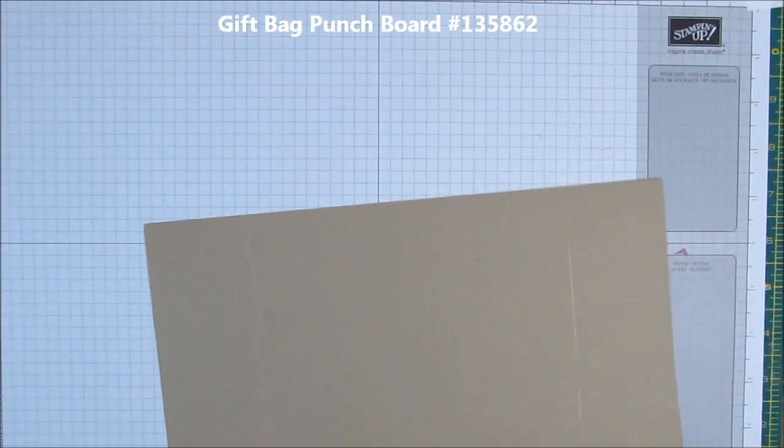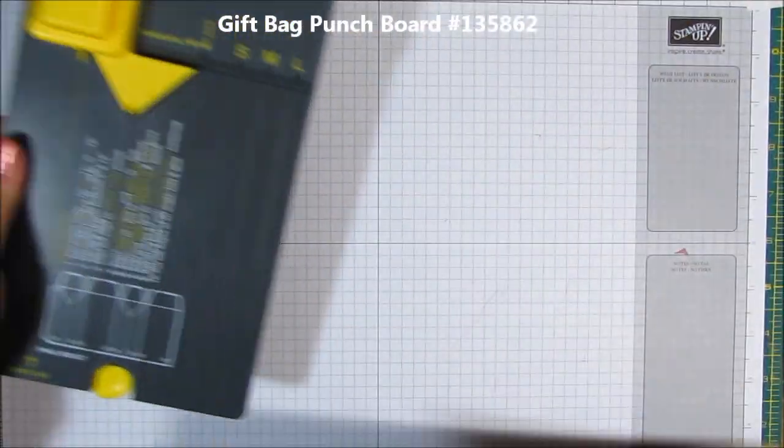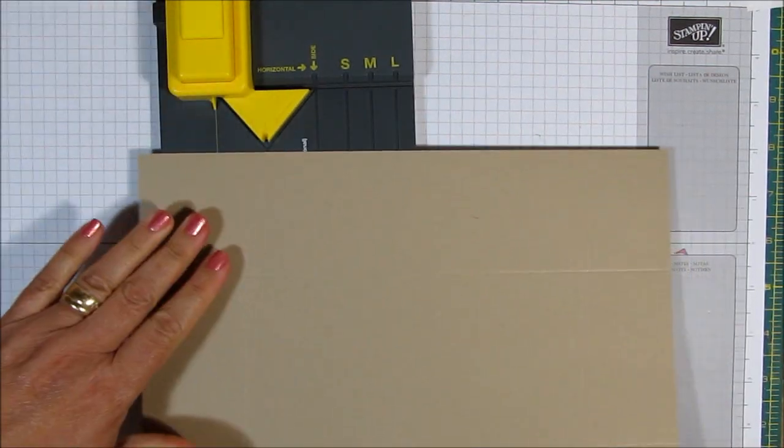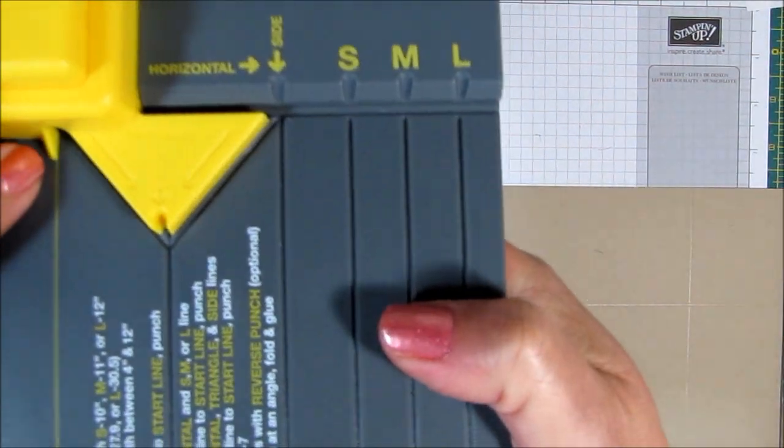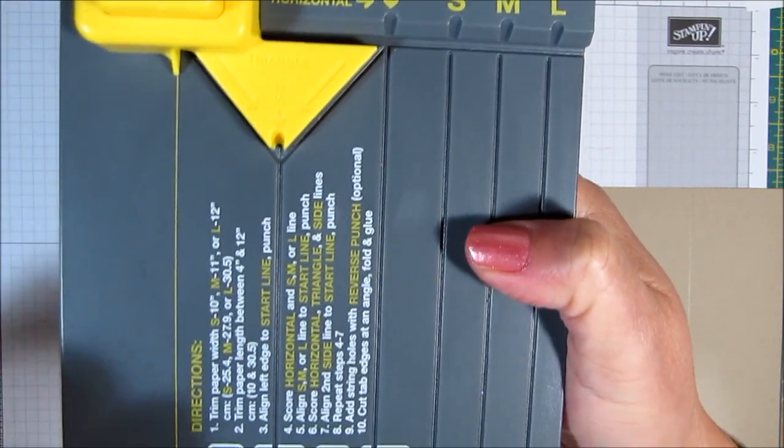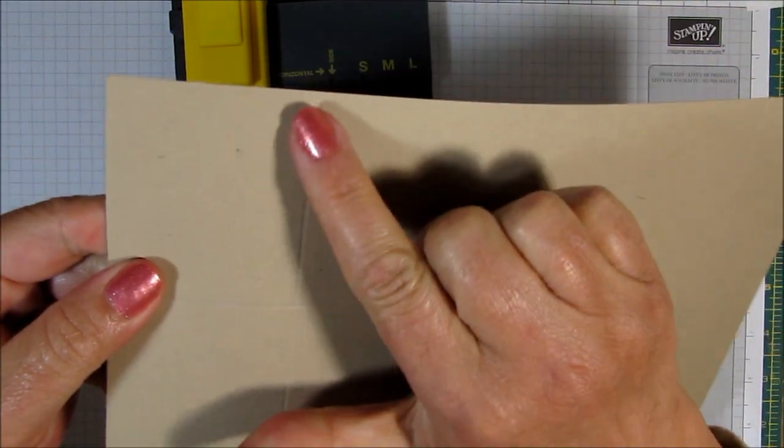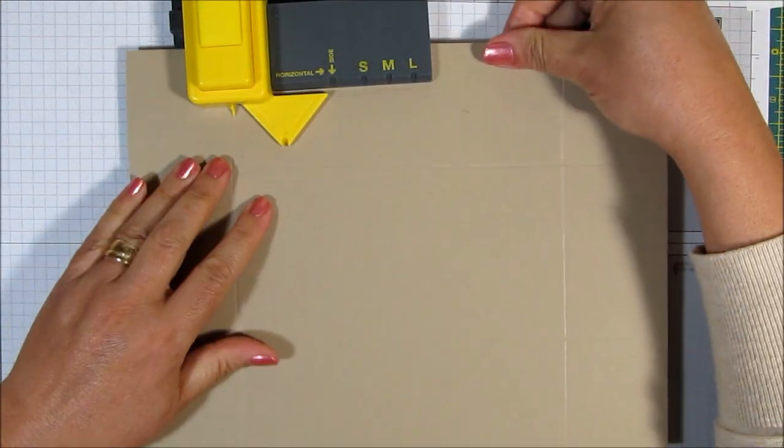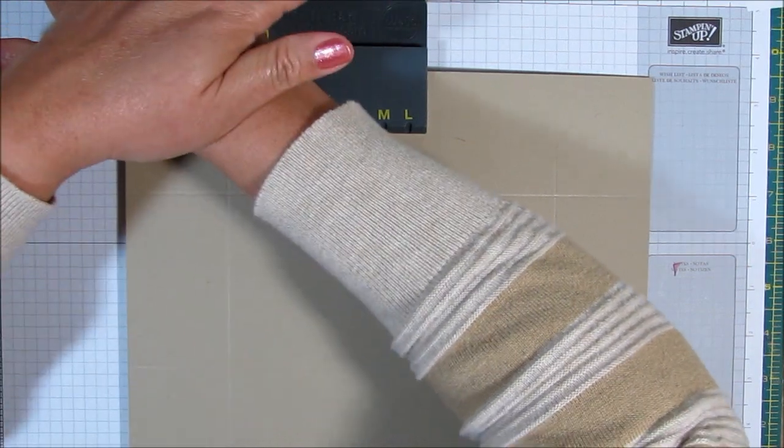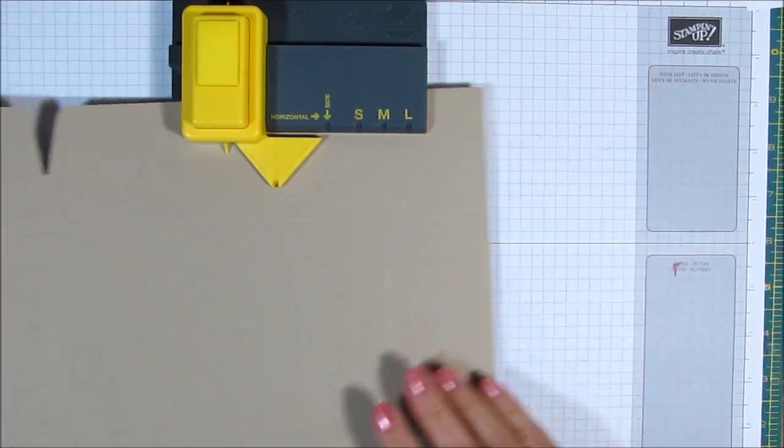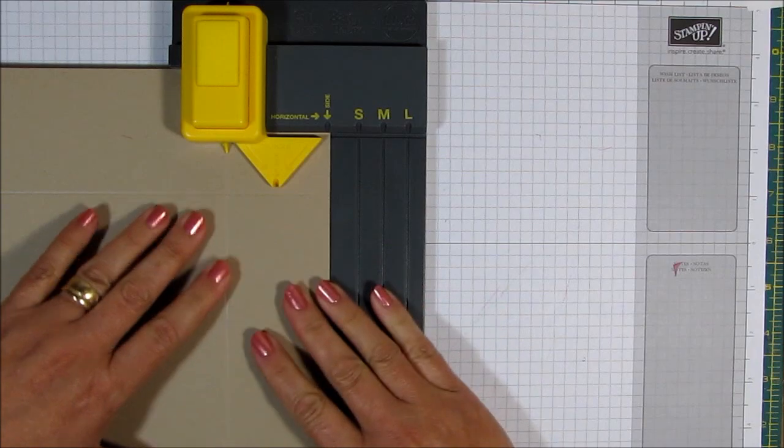And now you're going to bring out your gift bag punch board. Now the gift bag punch board, yours is probably going to be gray if you got it from Stampin' Up. There is this little tab right here, this little tab right here and that line. Yours will probably be gray if you have Stampin' Ups. You're going to line up your score line. You see the score line right here. You're going to line up the score line and every score line you are going to punch. You're not going to do any more scoring. You're just going to punch.